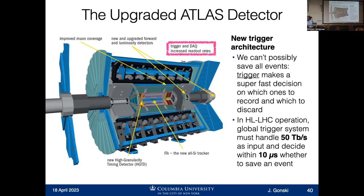The global trigger system in the high luminosity LHC has to handle 50 terabits per second as input and then decide within 10 microseconds whether or not it wants to save the event. There are huge orders of magnitude in these numbers — that just goes back to how fast the machine is operating, how big the detectors are, and how much information we're writing out.